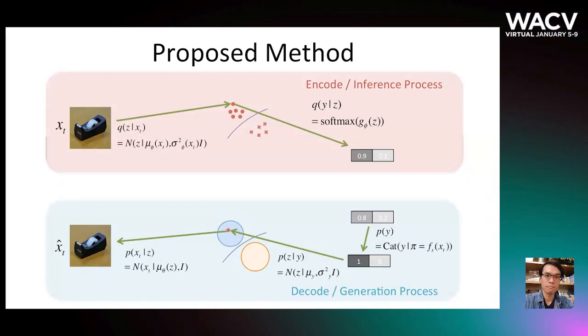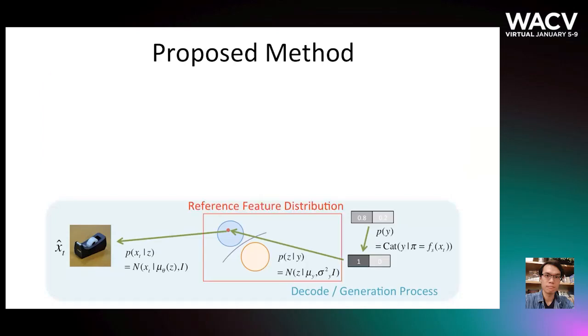Here we illustrate the overview of SOFA. SOFA includes two main processes, generation process and inference process. The generation process formulates a prior distribution, which decodes the source model predictions to the target data. A mixture of Gaussian distributions is induced from the predicted classes as the reference feature distribution, depicted with the red box in the figure. Each Gaussian distribution in the mixture represents one predicted class, respectively.